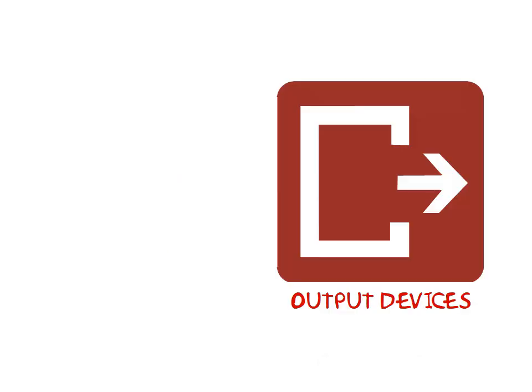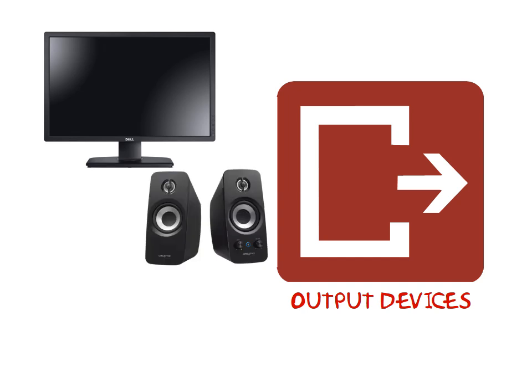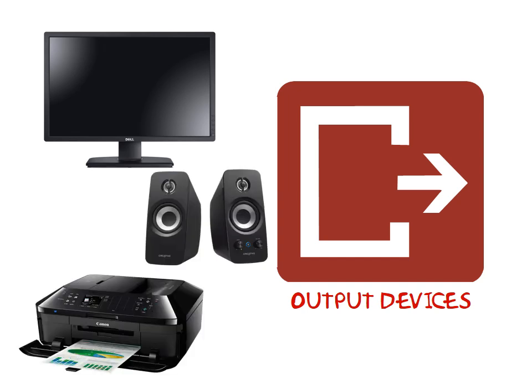Output devices are ones that give information back to you from a computer, such as a monitor, which allows you to see what you're working on, speakers, which let you listen to a song that you've saved, or a printer, which lets you print out the letter that you have written.